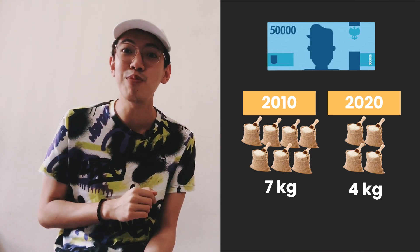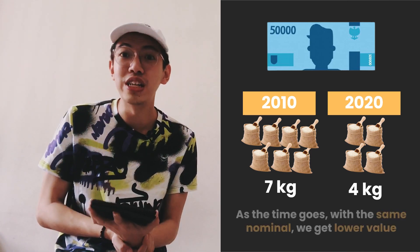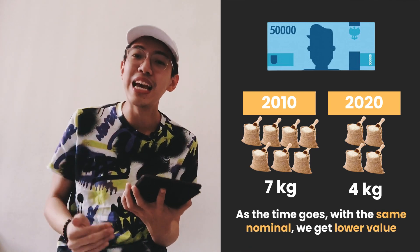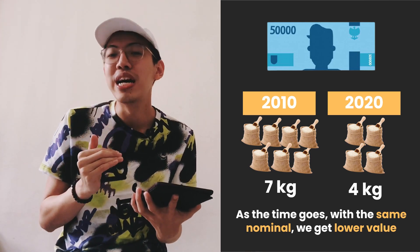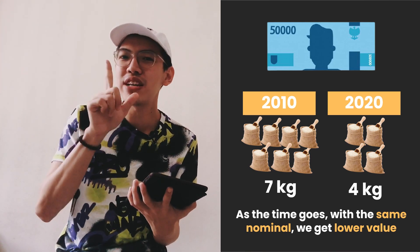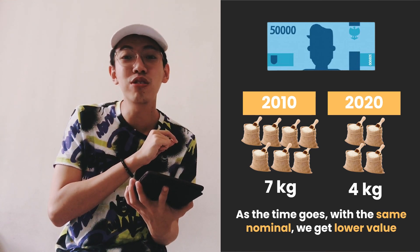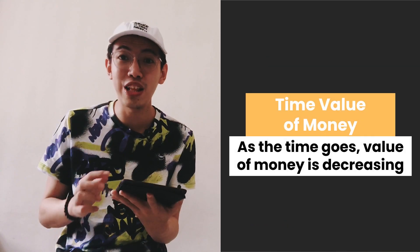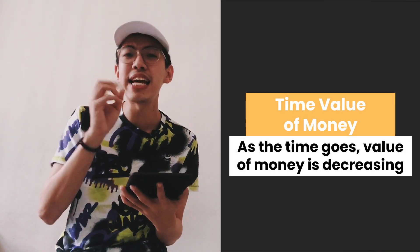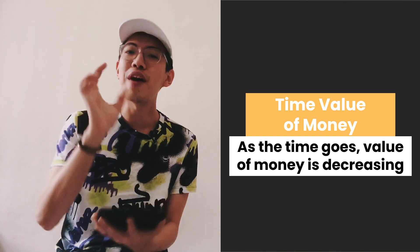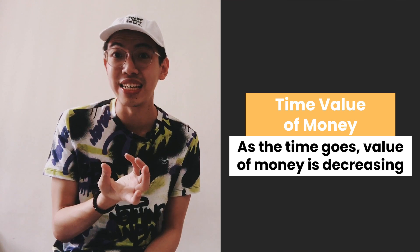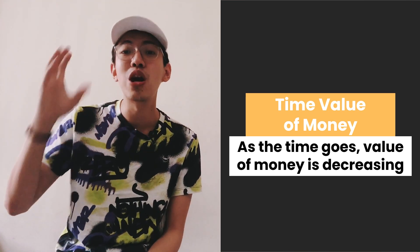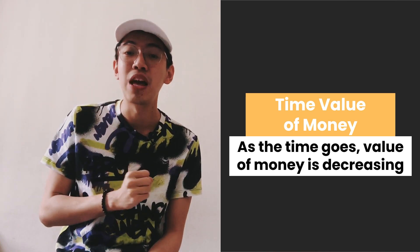What can we conclude here? As time goes on, with the same nominal amount of money we get lower value. In 2010 we got seven kilograms, while in 2020 we could only get four kilograms. This is time value of money — it states that as time goes on, the value of money is decreasing.